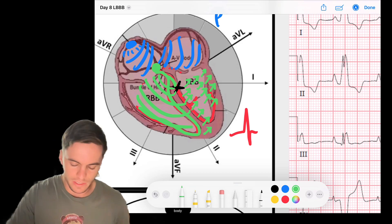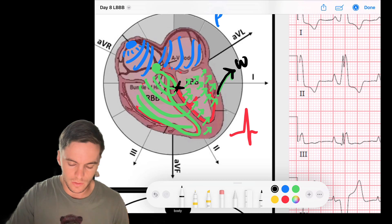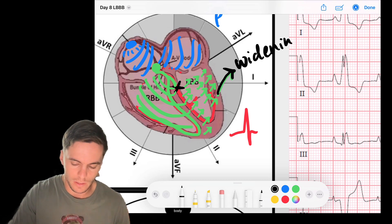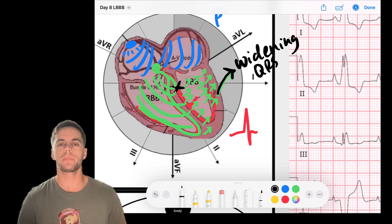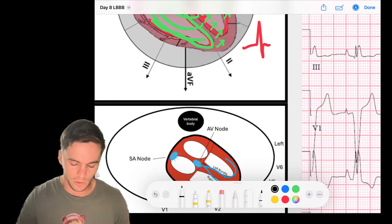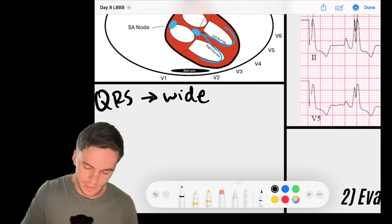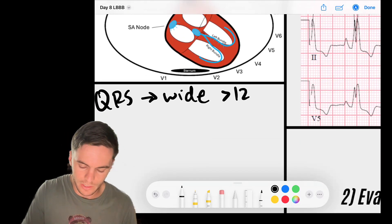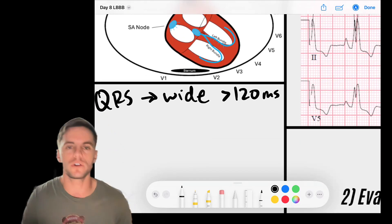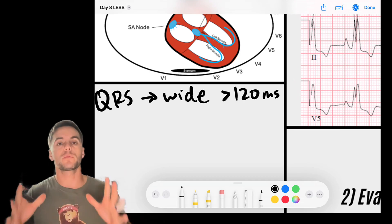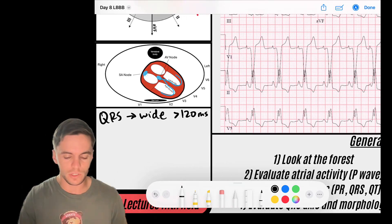And so that is the cause of the widening of the QRS complex. So that's the first criteria. Our QRS is going to be wide. And remember that the wide QRS is greater than 120 milliseconds, or three small boxes.